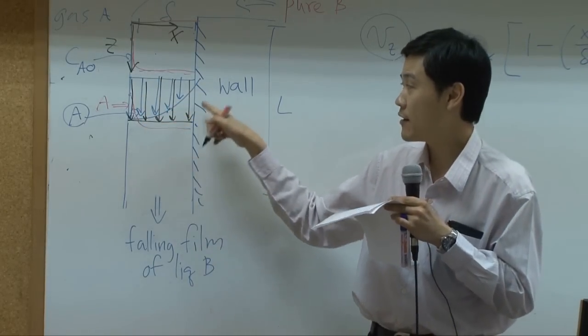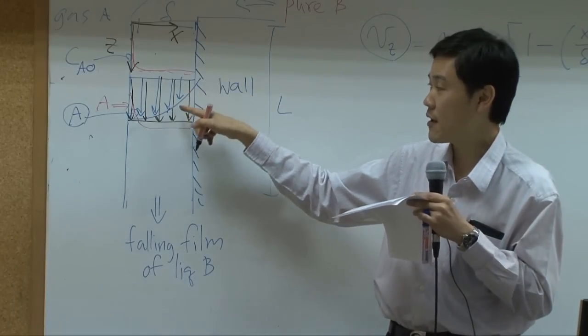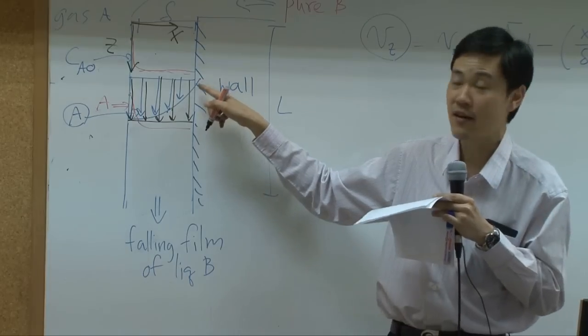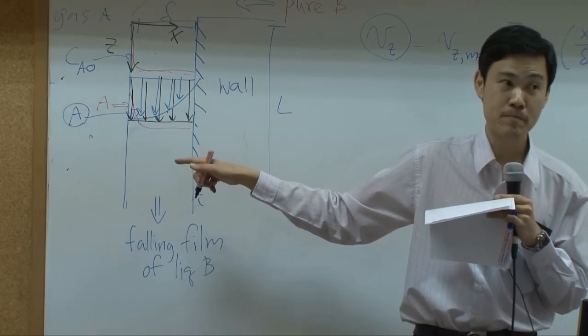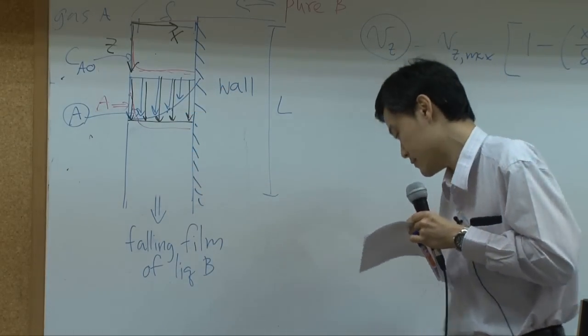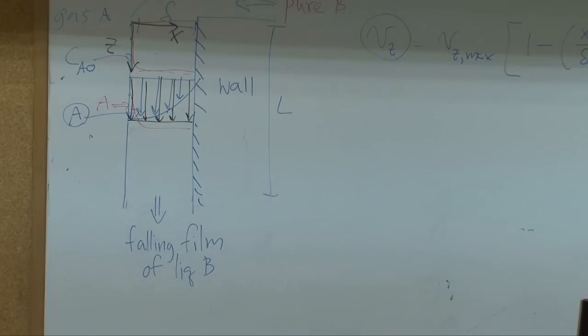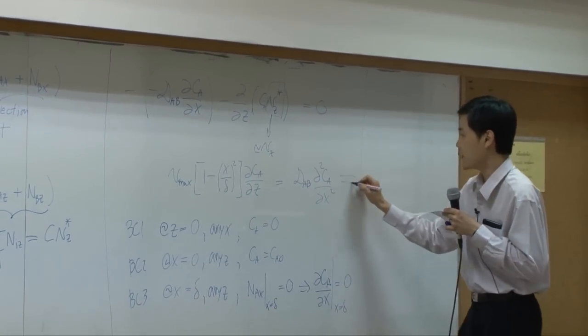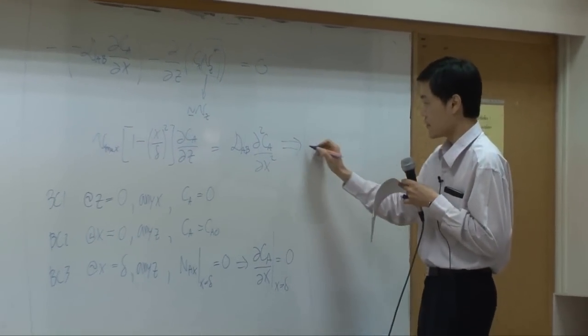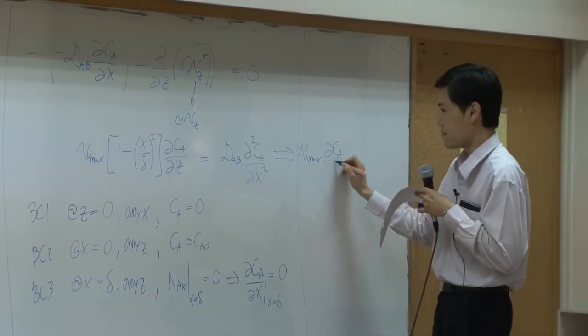Because A is swept by the maximum velocity, it doesn't matter whether the velocity around here is going lower or not, because A will be swept away anyway. By doing this you can reduce the equation from here as a function of x. You can reduce it to V max, which is a constant, times dCA by dz equal to DAB times dCA squared by dx squared.